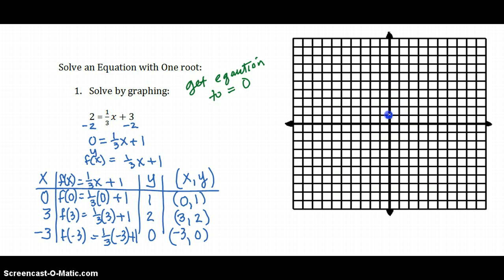I can come over here and plot. 0, 1. 3, 2. And negative 3, 0. There are 3 points. That makes it nice and easy to draw a decent line without a straight edge.